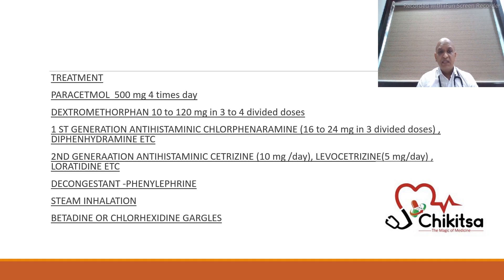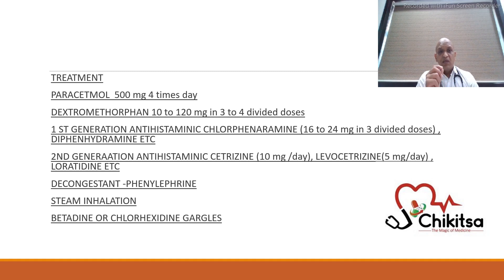If the patient mainly has a cough problem and you feel it is a non-infective, non-bacterial type of expectoration, you can give a centrally acting cough suppressant — that is dextromethorphan. If congestion is the main problem, like throat pain, you give antihistamines — first or second generation: chlorpheniramine, diphenhydramine, cetirizine, levocetirizine, or loratadine. Such antihistamines can be given.